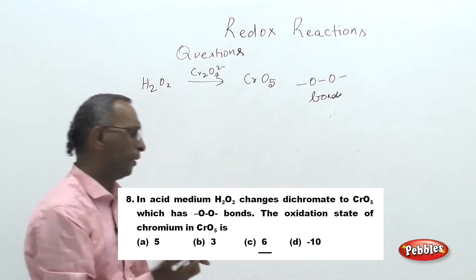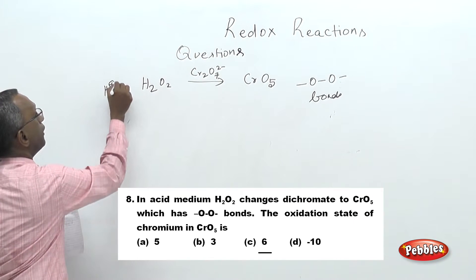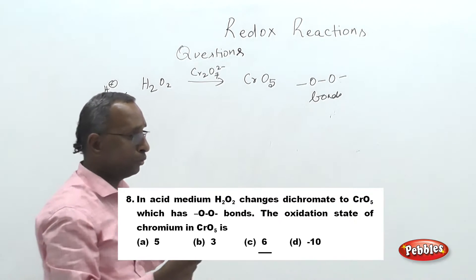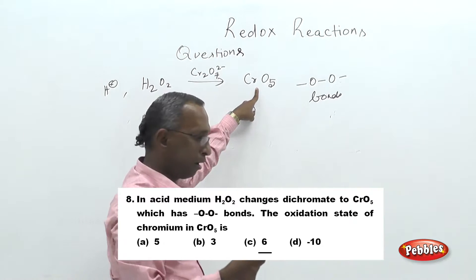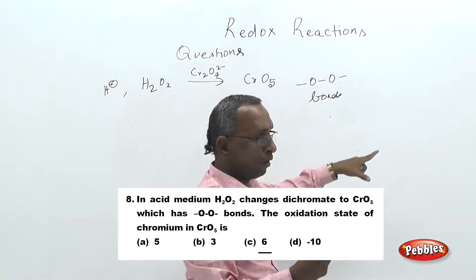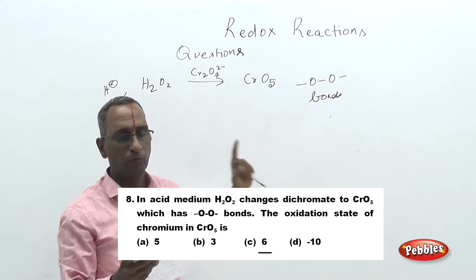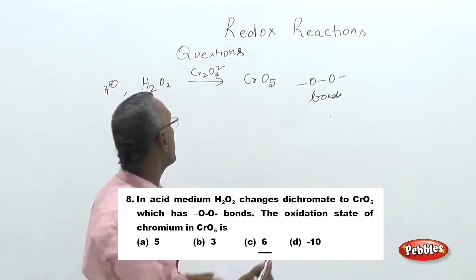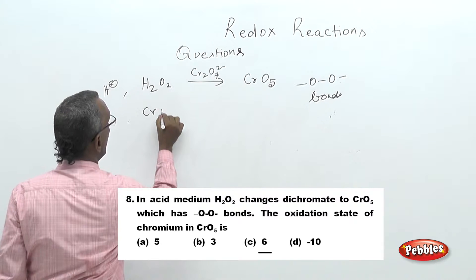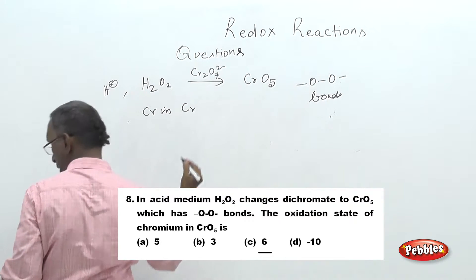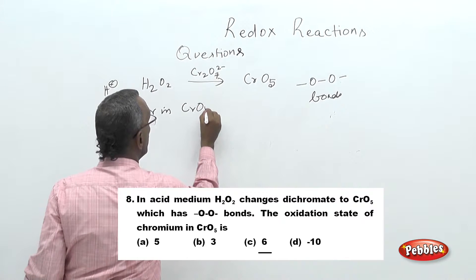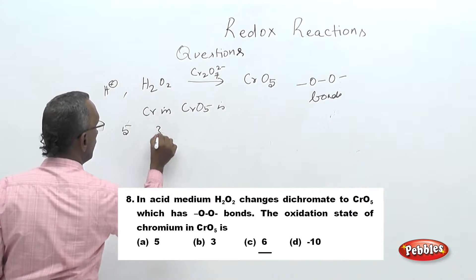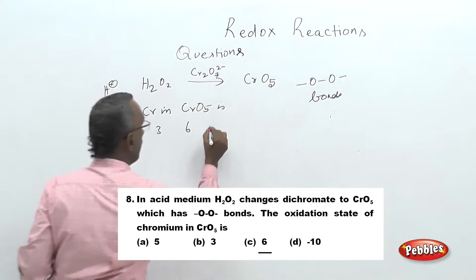The question asks: in acid medium, hydrogen peroxide changes dichromate to chromium pentoxide having oxygen-oxygen peroxide linkages. What is the oxidation state of chromium in chromium pentoxide (CrO₅)? The choices given are 5, 3, 6, and minus 10.